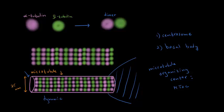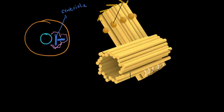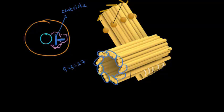The centrosome is an organelle found near the nucleus of a cell. It's made up of many different proteins, but we'll focus mainly on two rod-shaped structures found within it, each called a centriole. Looking more closely at the structure of centrioles, they're made up of triplets of microtubules — three microtubules attached to each other — and there are nine of these triplets making up one centriole, meaning it takes 27 microtubules to make one centriole.